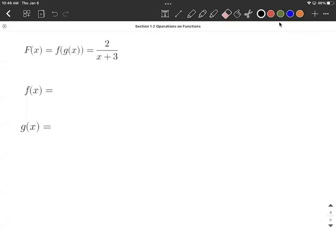As you can see, the original given function is defined to be a composition of functions. So it's supposed to be little f on the outside, and then g of x is going to be our inner function. But when we compose these two together, what we need to get is 2 over x plus 3.